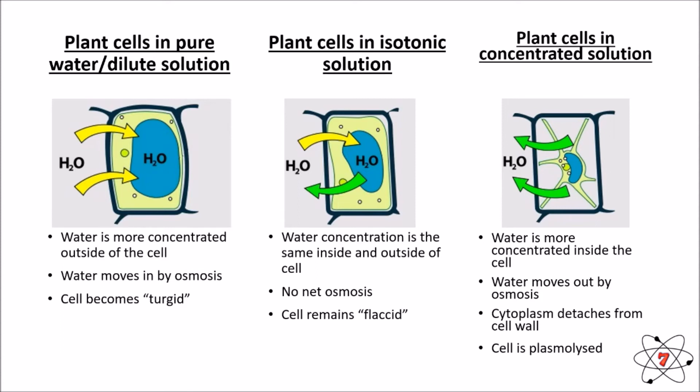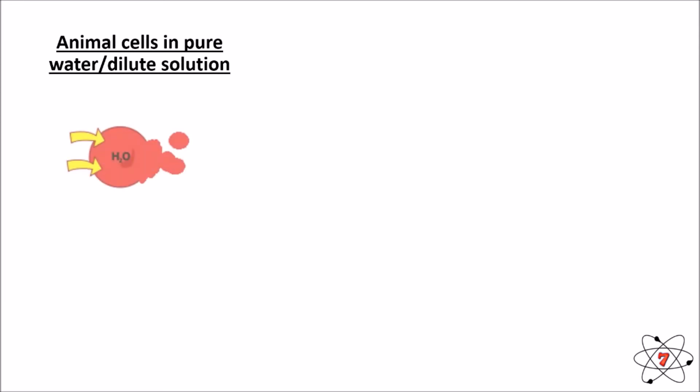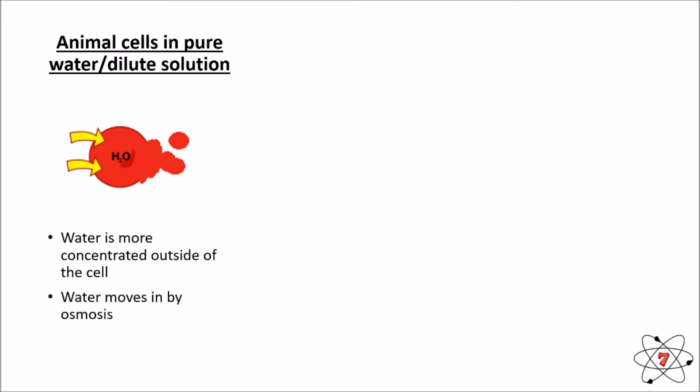What happens if we do this in an animal cell? If we put an animal cell in pure water, water is again going to move in by osmosis because the water is more concentrated outside the cell than inside. But this time the cell is going to burst — and this process is called lysis. The reason the cell bursts is because there is no cell wall to help keep the cell together.